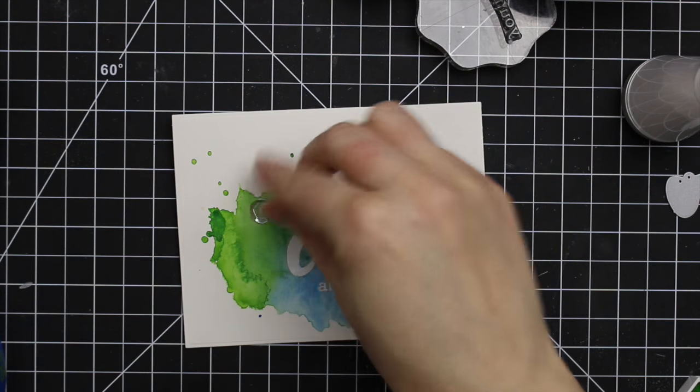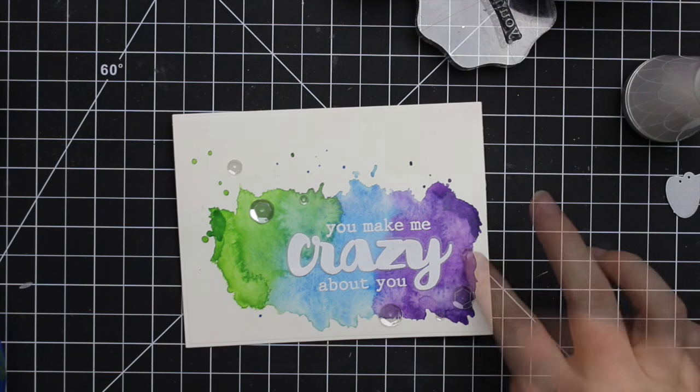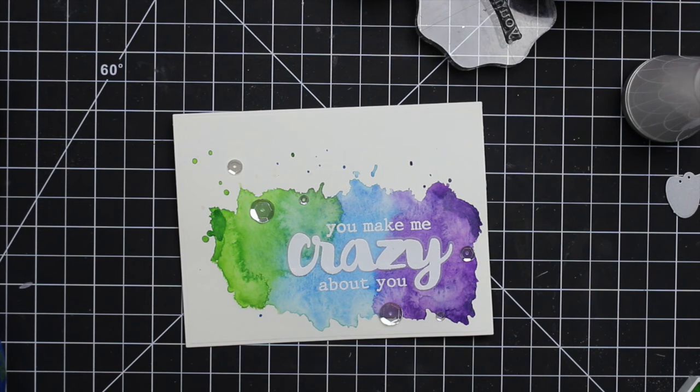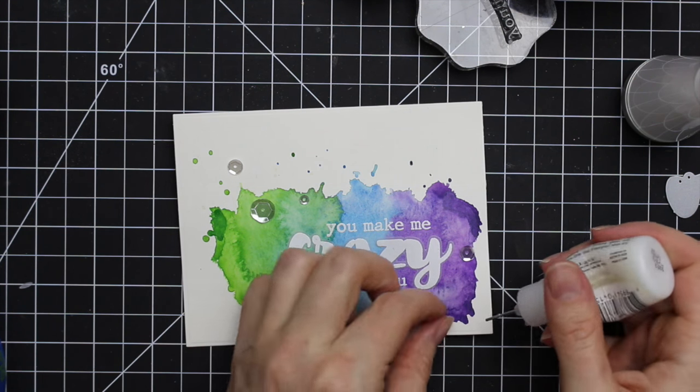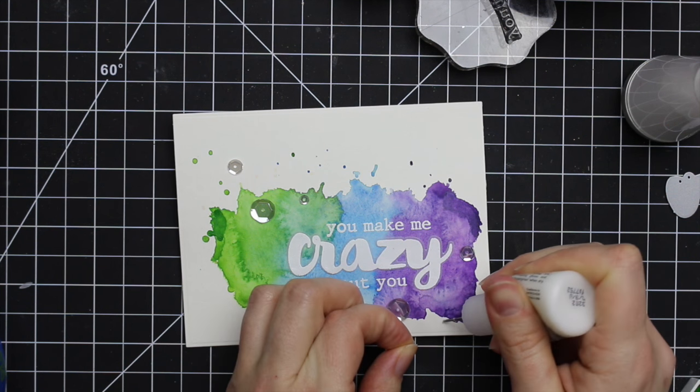And then of course I thought about using enamel dots or something, but I'm obsessed with these sequins. So I added some more of these to this one as well, and just adhered them into place with my multi-medium matte. So once those were all adhered, I was going to use foam tape, but I will show actually how I adhere these to the card base.